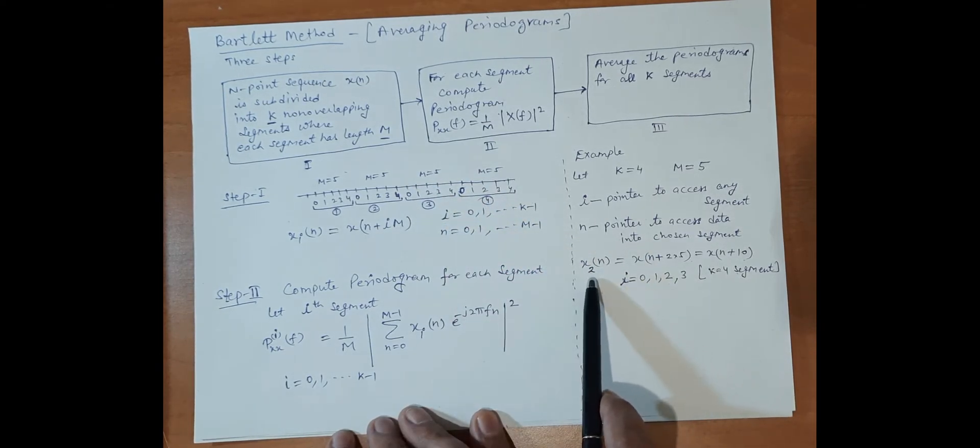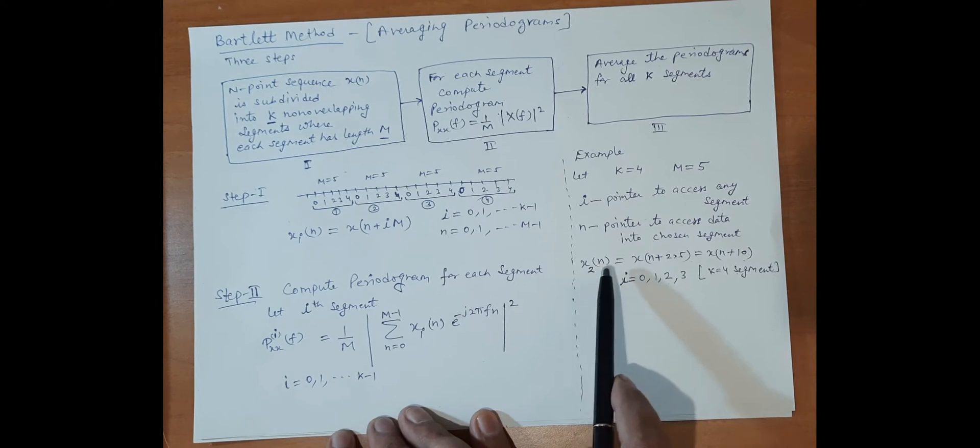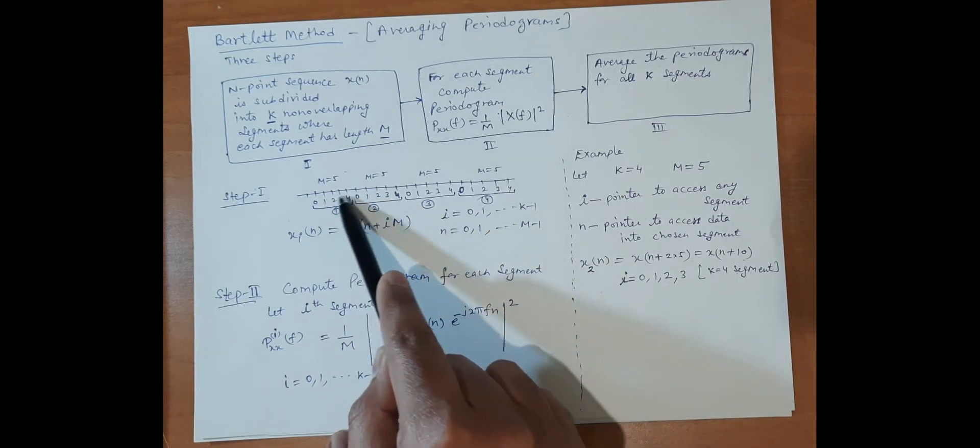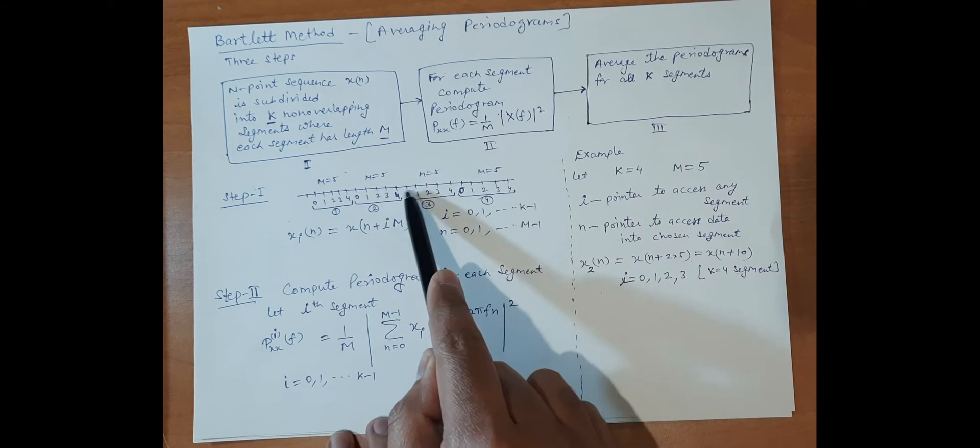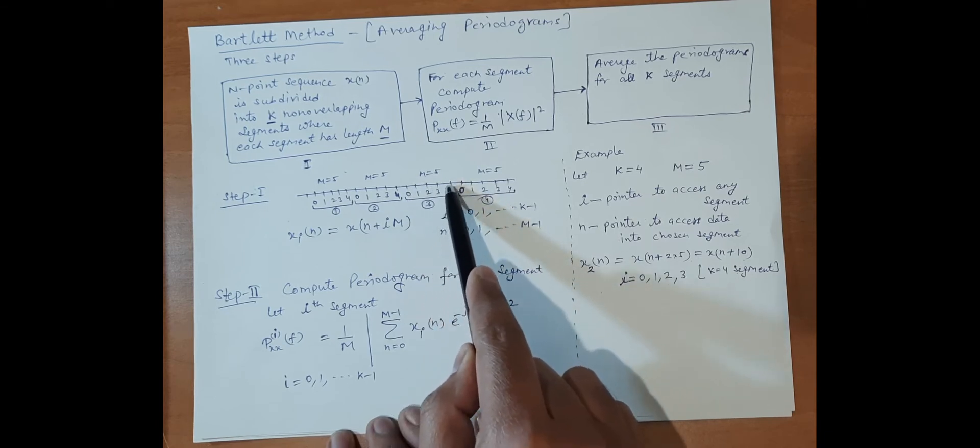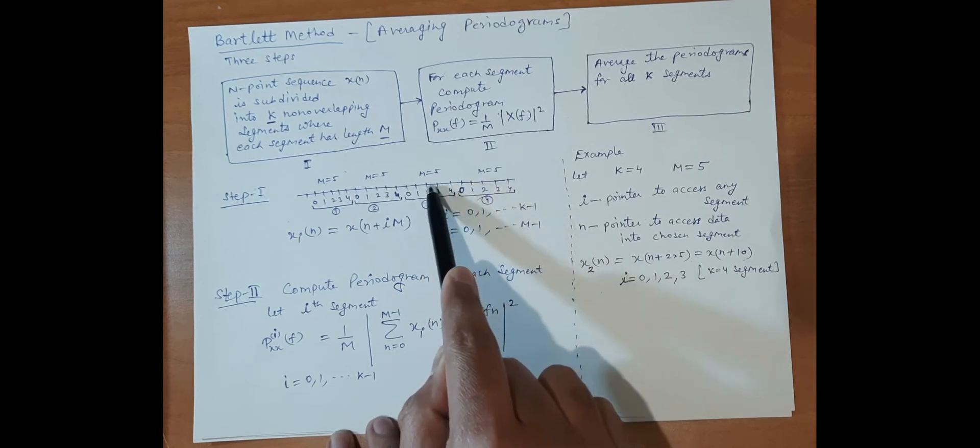More precisely, if we want to access x_2(4) or x_2(5), we use x_2(n) with n = 0, 1, 2, 3, 4. For example, x_2(4) is this one, and x_2(3) is this one.